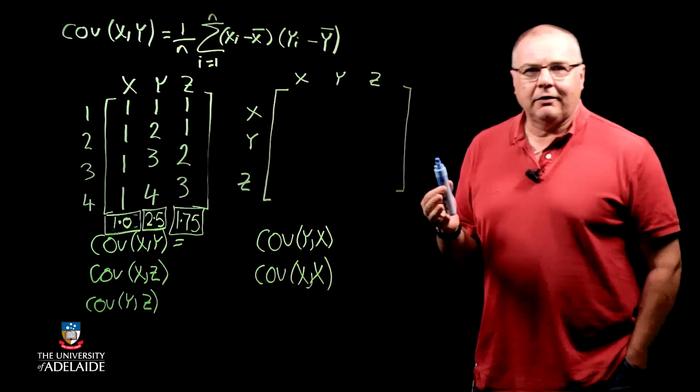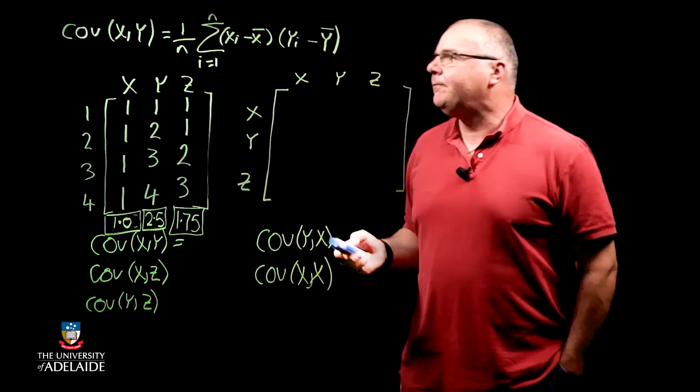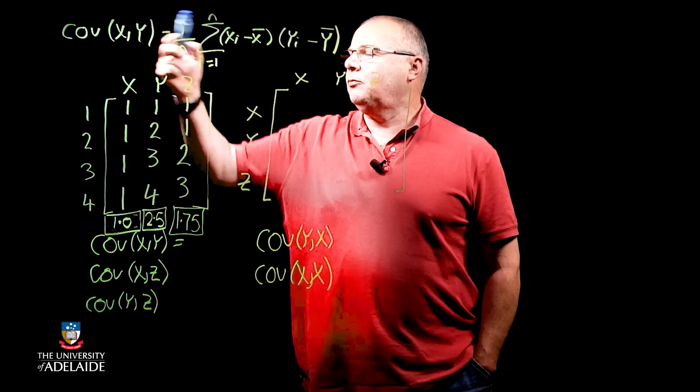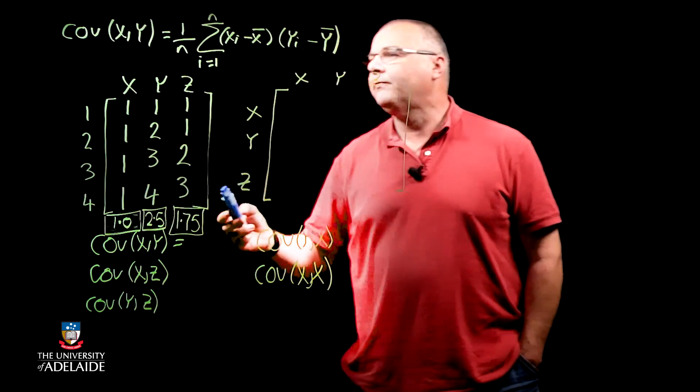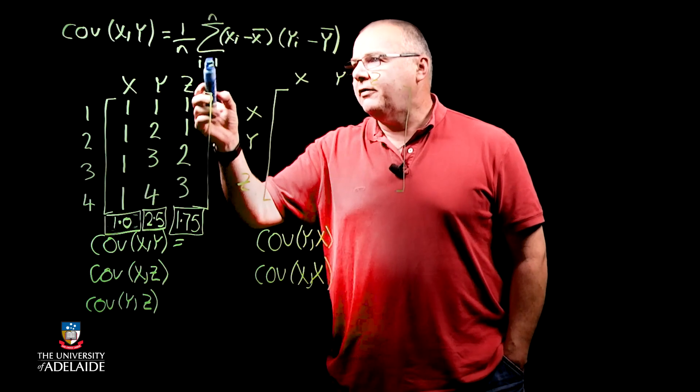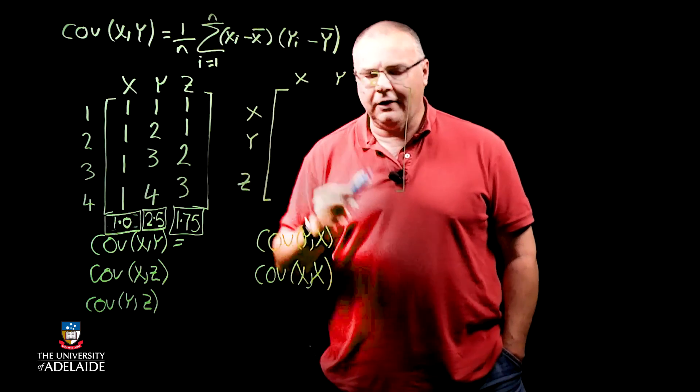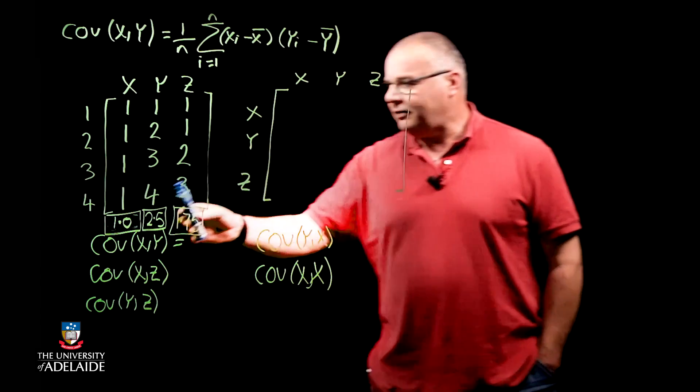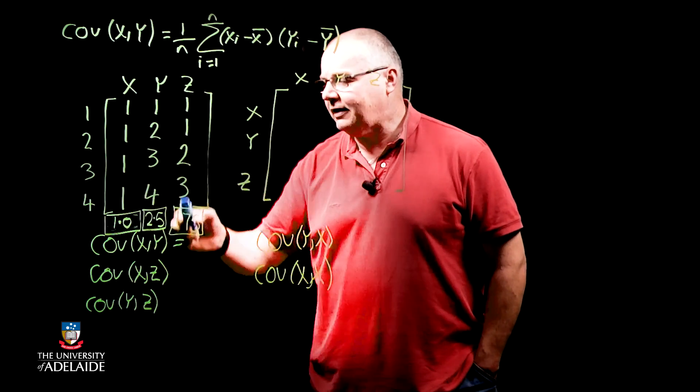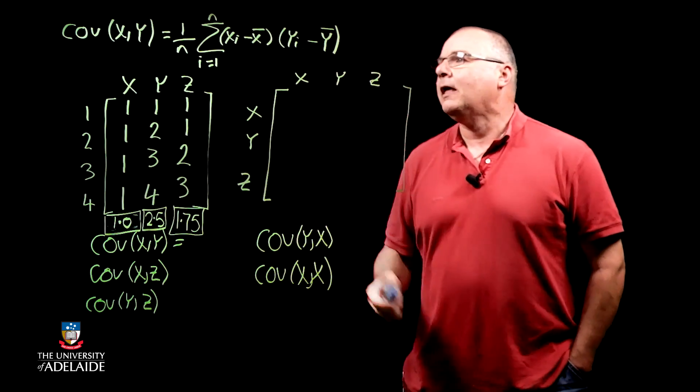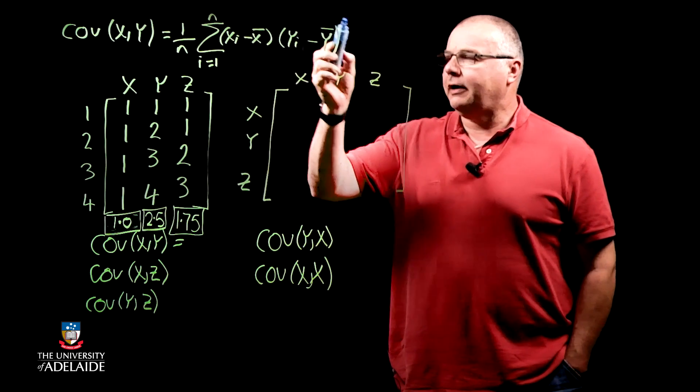So let's think about how we calculate the sample covariance. I've written the formula up here, and the covariance of the variables x and y is going to be one over n, where n is our number of subjects, so four. What we do is we add over i going from one to n, every value of xi minus, remember x bar is the sample mean, and I've calculated them here for you. We've got the sample mean of the x is one, the y is 2.5, and the z is 1.75.